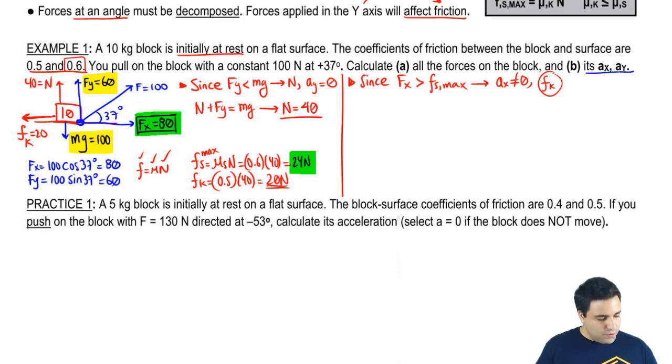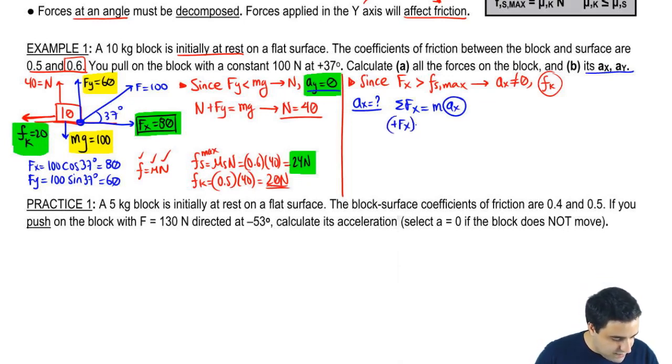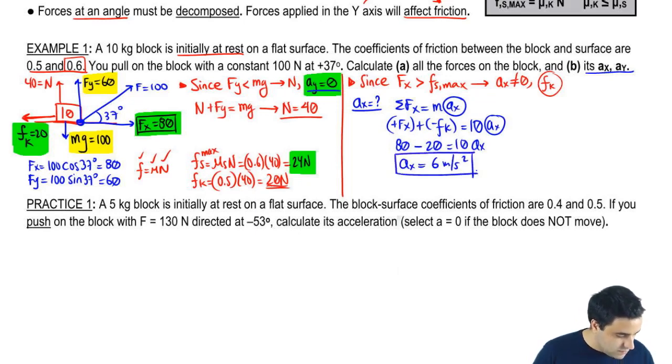And I want to know the acceleration in the x and y. I already know the acceleration in the y was zero because the forces are canceling there. To find the acceleration in the x-axis, I'm going to write F equals ma. Sum of all forces in the x equals max, and ax is what I want. The forces in the x-axis are these two green forces over here. So it's Fx and friction. So you can write positive Fx plus negative friction kinetic. Mass is 10, and ax is what I want. This is 80 positive to the right, and this is 20 to the left. So if you do this, you get that the acceleration is 6 meters per second squared.